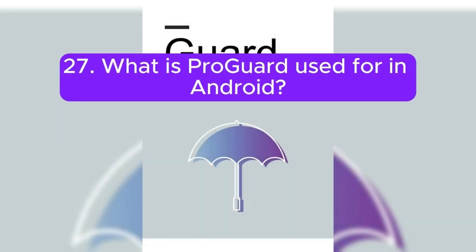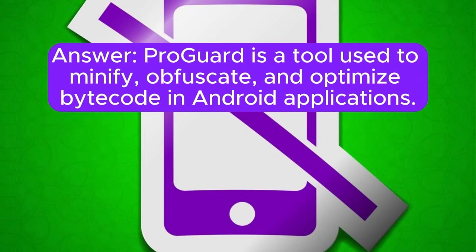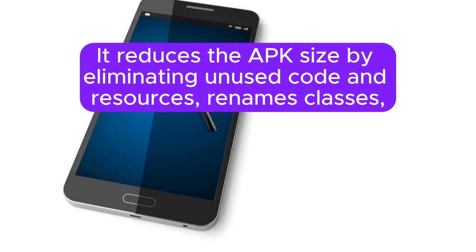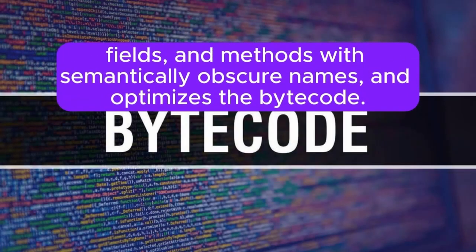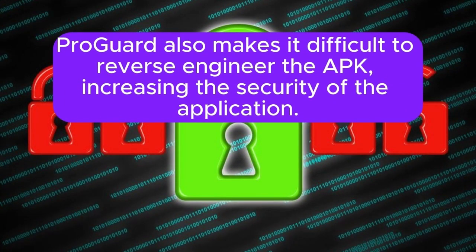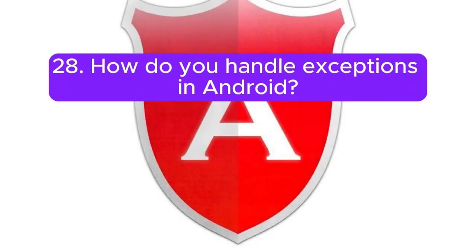Question 27: What is ProGuard used for in Android? ProGuard is a tool used to minify, obfuscate, and optimize bytecode in Android applications. It reduces the APK size by eliminating unused code and resources, renames classes, fields, and methods with semantically obscure names, and optimizes the bytecode. ProGuard also makes it difficult to reverse-engineer the APK, increasing the security of the application.